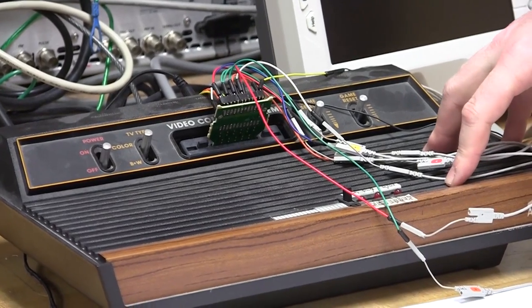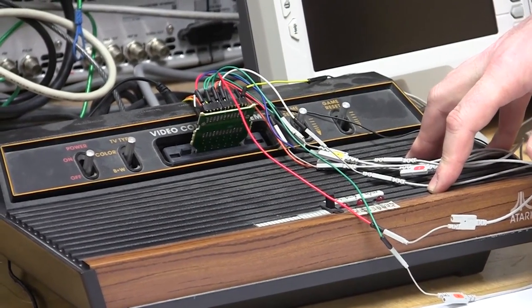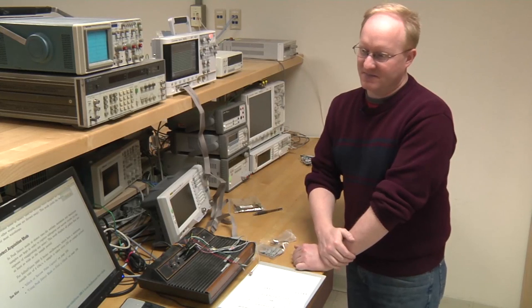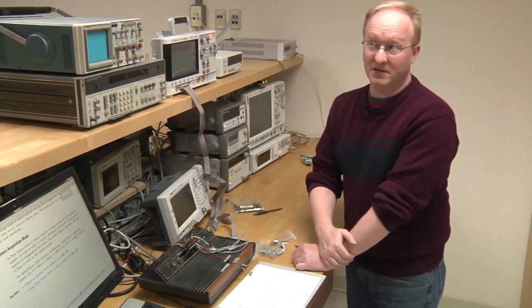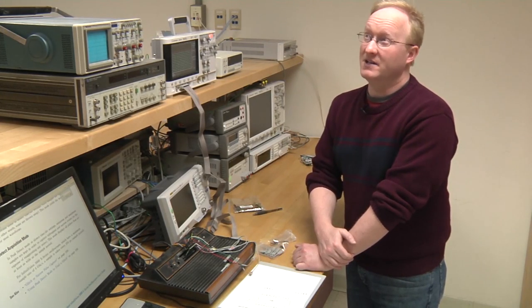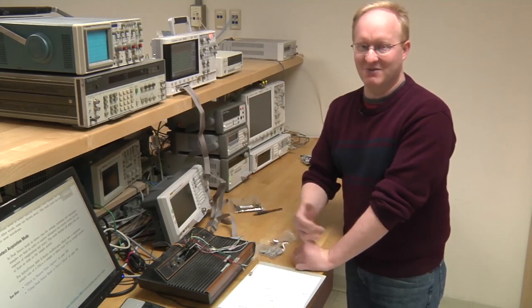So to do that, I need to analyze what the Atari is doing on boot. Now, the Atari has a 6507 CPU in it, which is similar to the classic 6502. 6507 is basically the same thing, but without external interrupts or as much address space. This thing can only address 8K of memory.